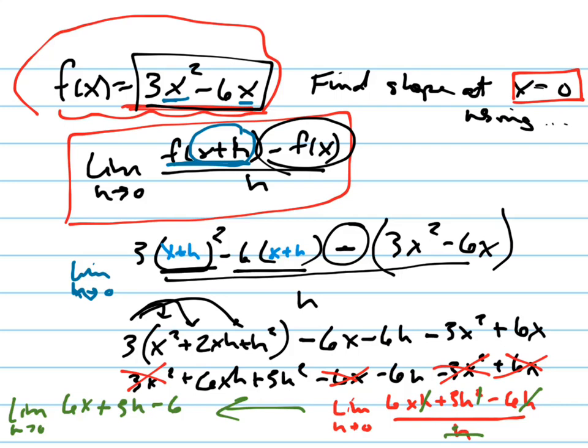Well, when h goes to 0, what's this thing going to do? As h goes to 0, what's going to happen to the 3h right here? It's going to go away because it's going towards 0, right? So I'm going to get rid of that. So my answer is 6x minus 6.